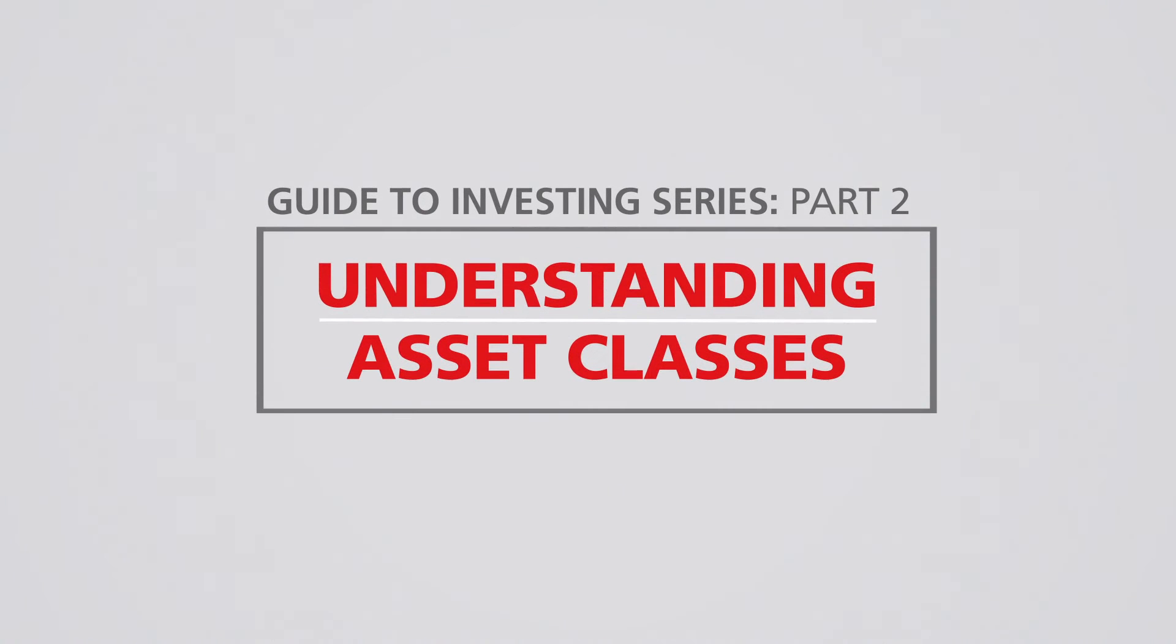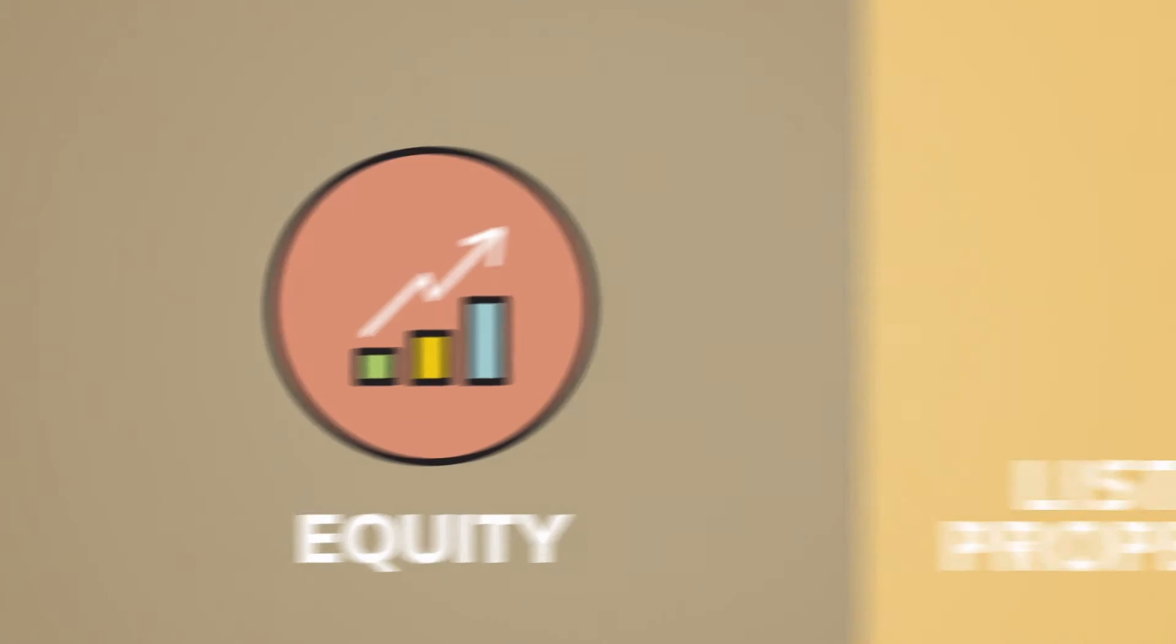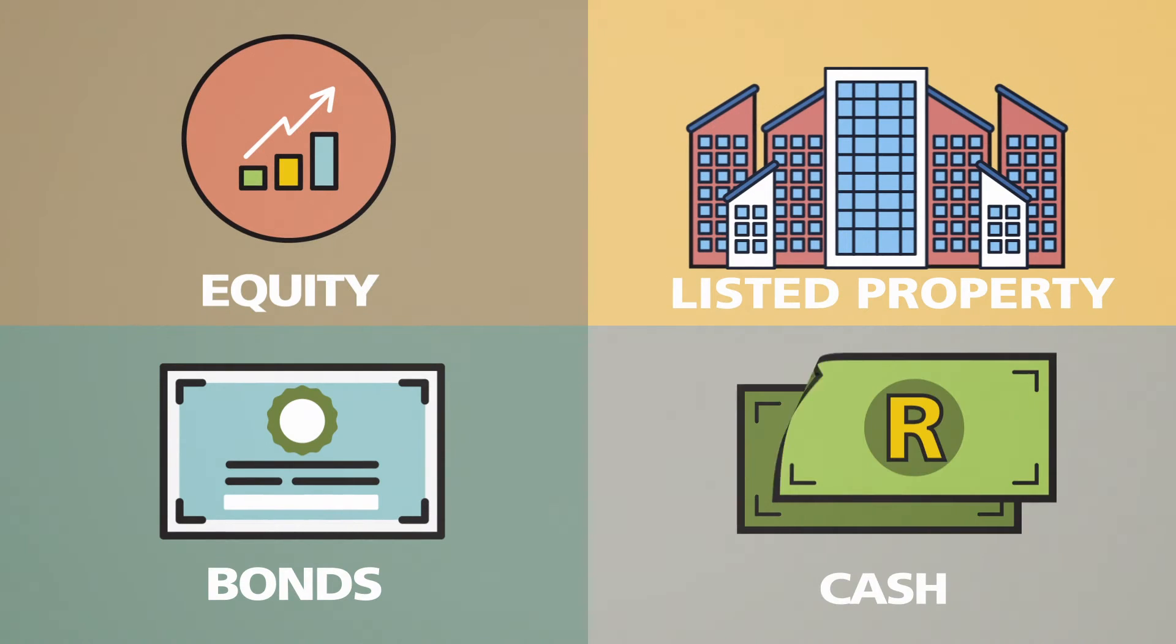Welcome to the Guide to Investing Part 2, where we look at asset classes. A unit trust fund is made up of different assets, namely equity, listed property, bonds and cash.